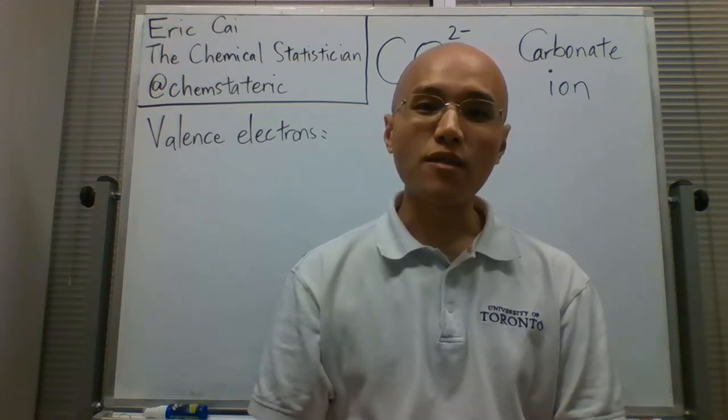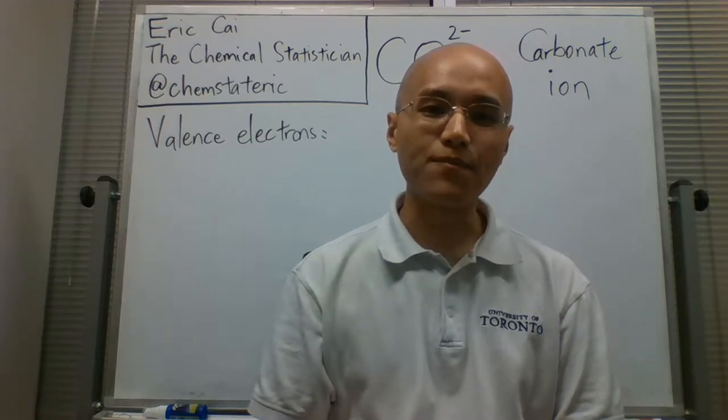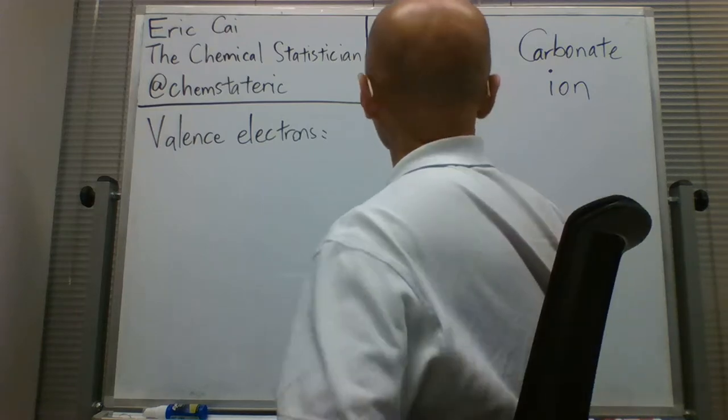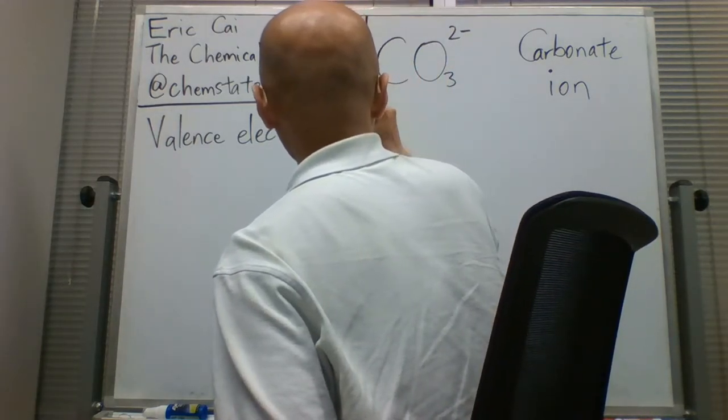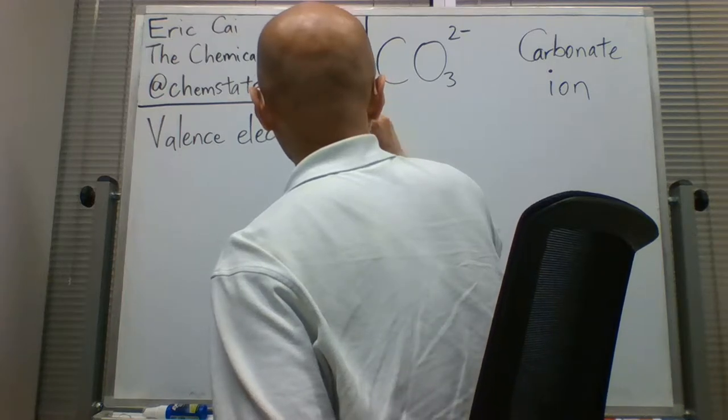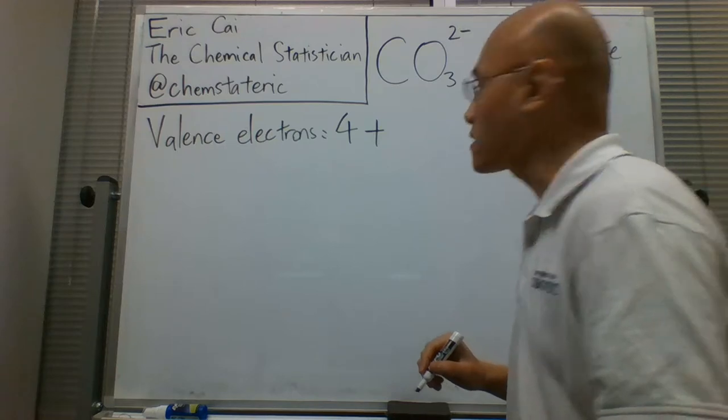As always, we begin by counting the number of valence electrons in the constituent atoms. We know that carbon has four valence electrons, and each of the three oxygens has six valence electrons.